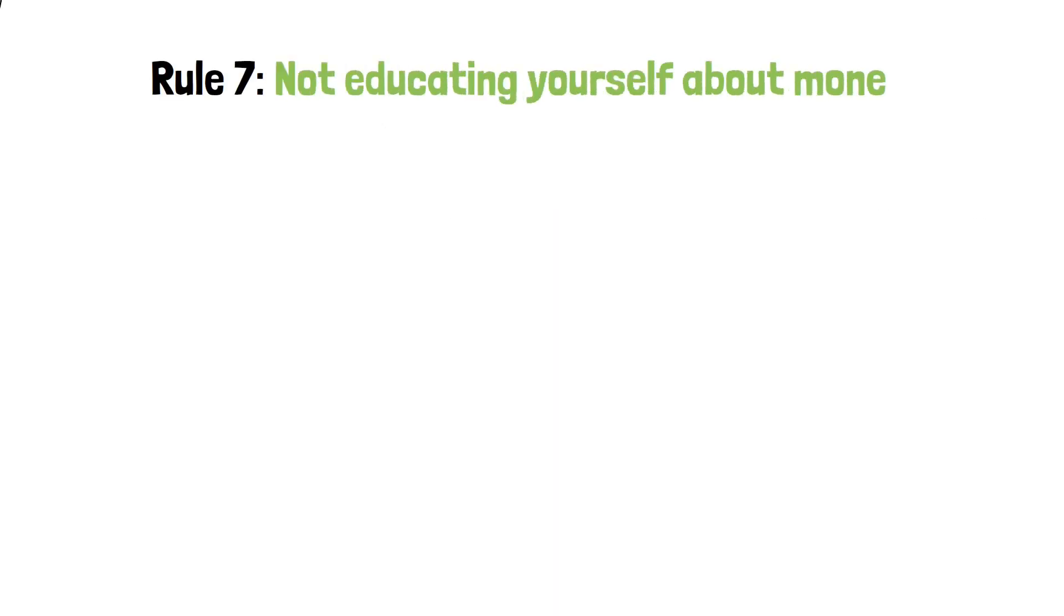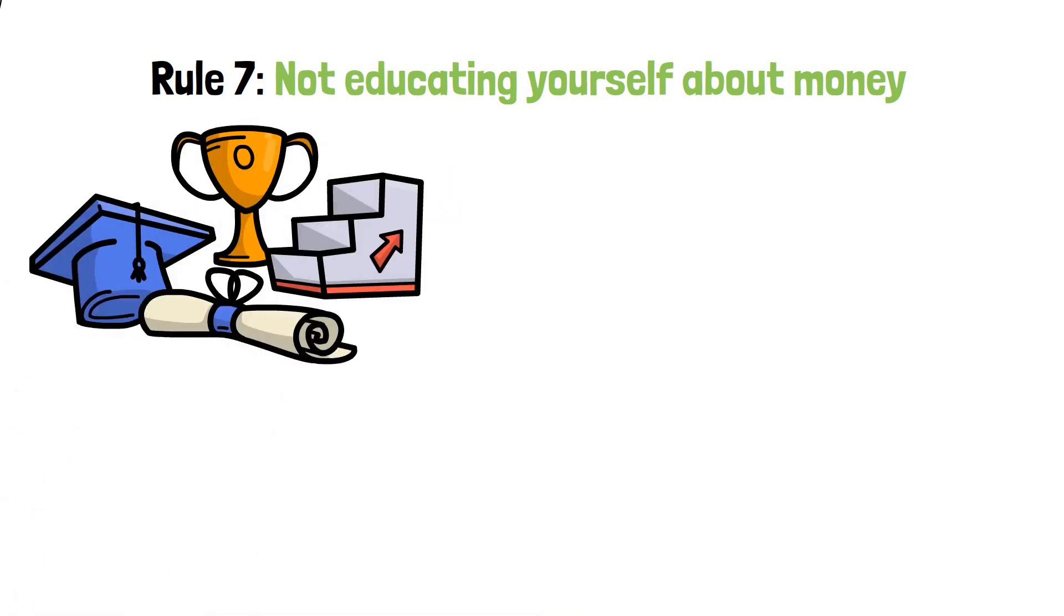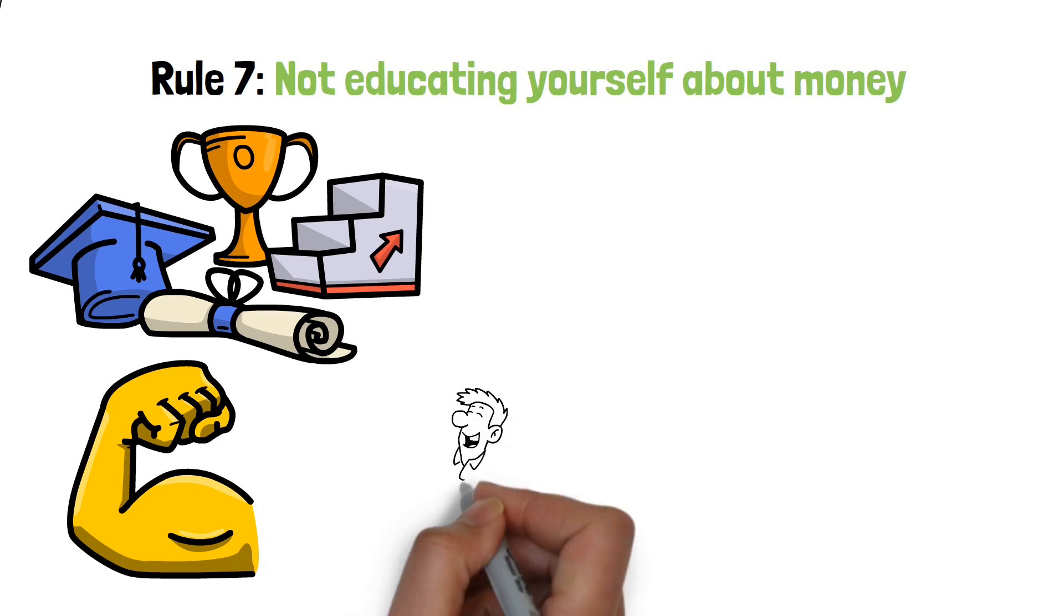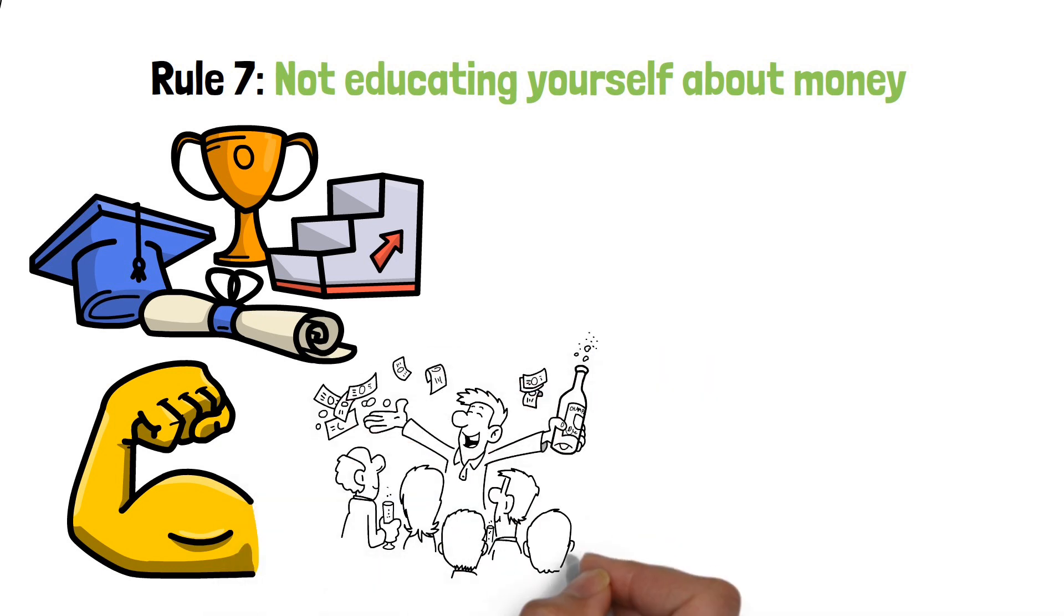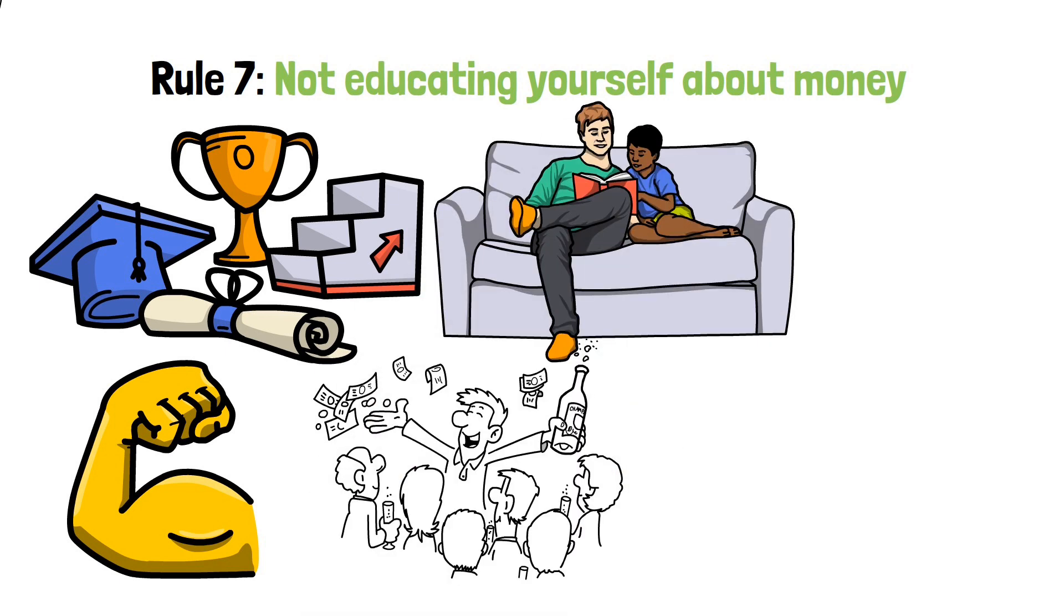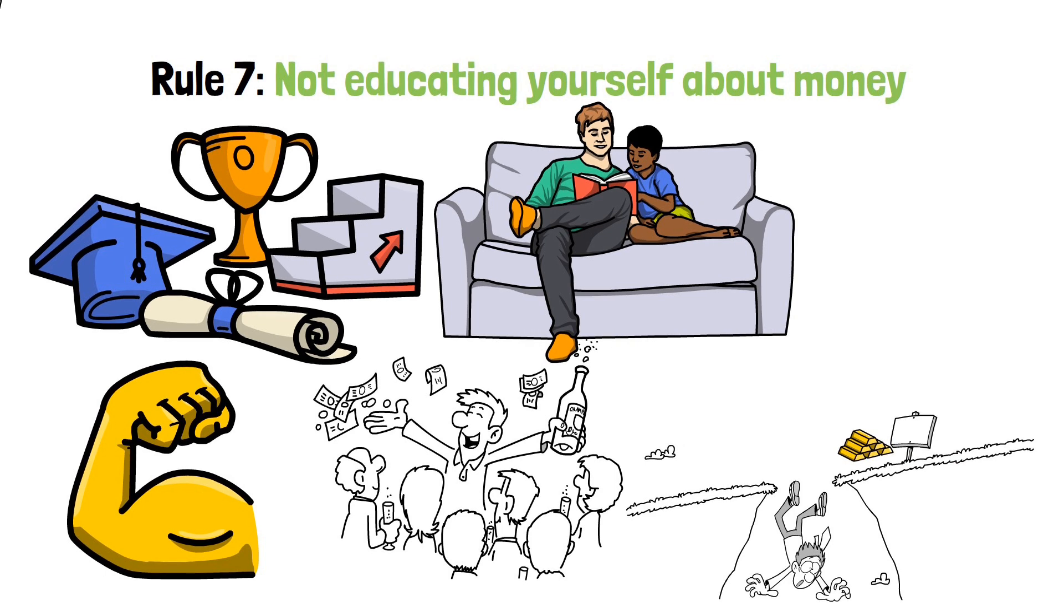Rule 7: Not educating yourself about money. In the realm of personal finance, knowledge is power. The more you know about money, the better equipped you will be to make sound financial decisions. But if you don't take the time to educate yourself about money, you're putting yourself at a disadvantage. You're essentially handing over the reins of your financial future to others.